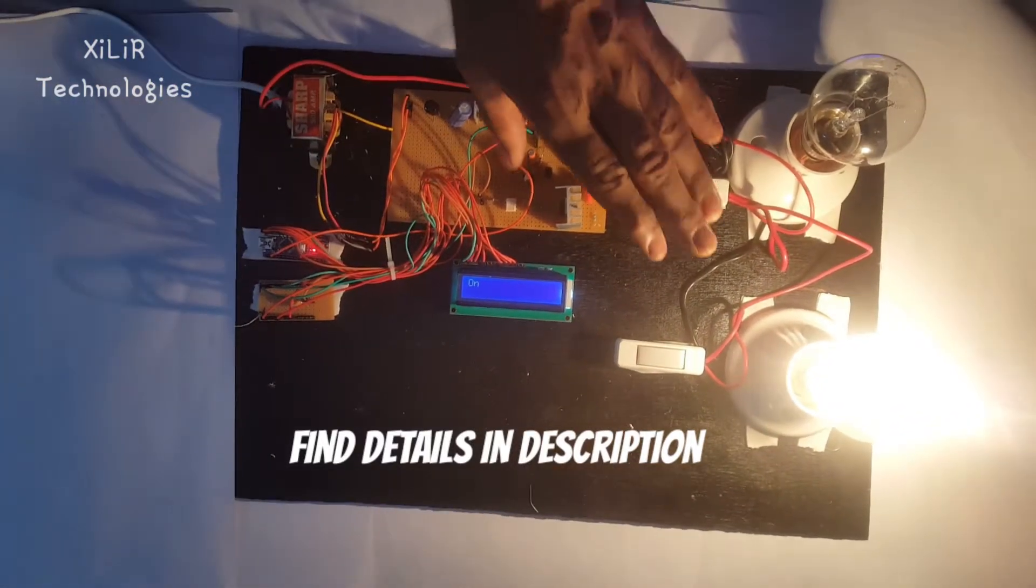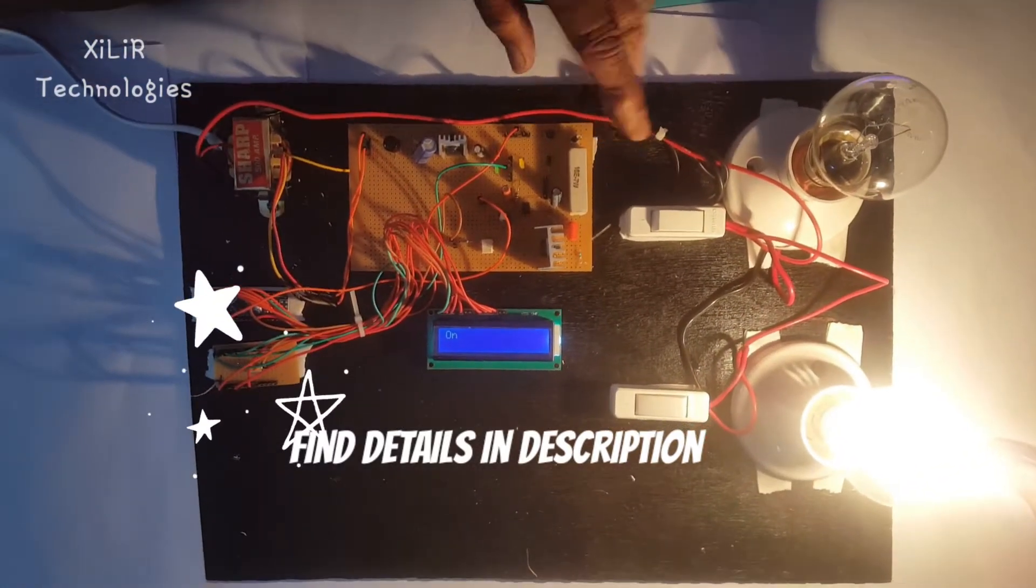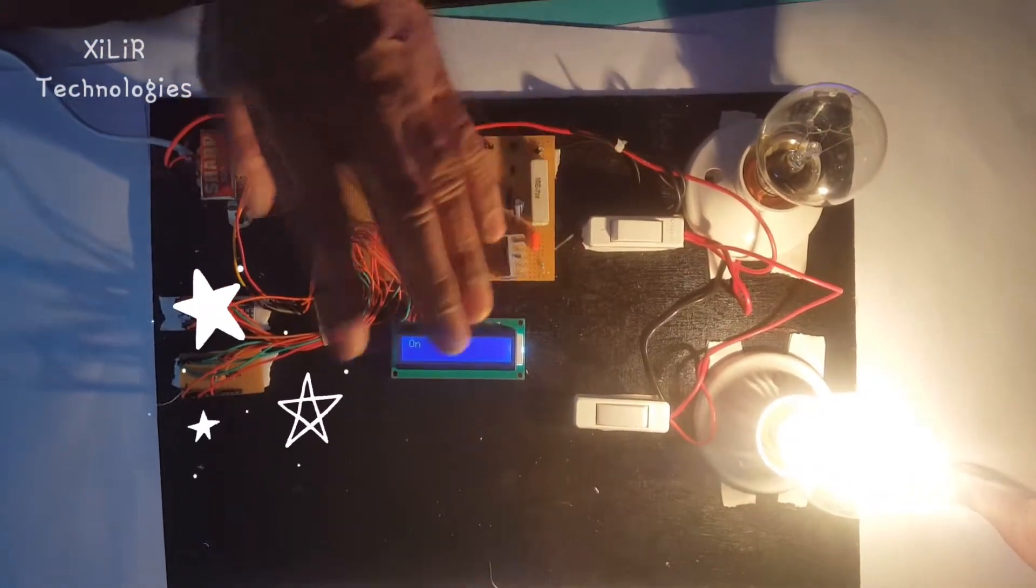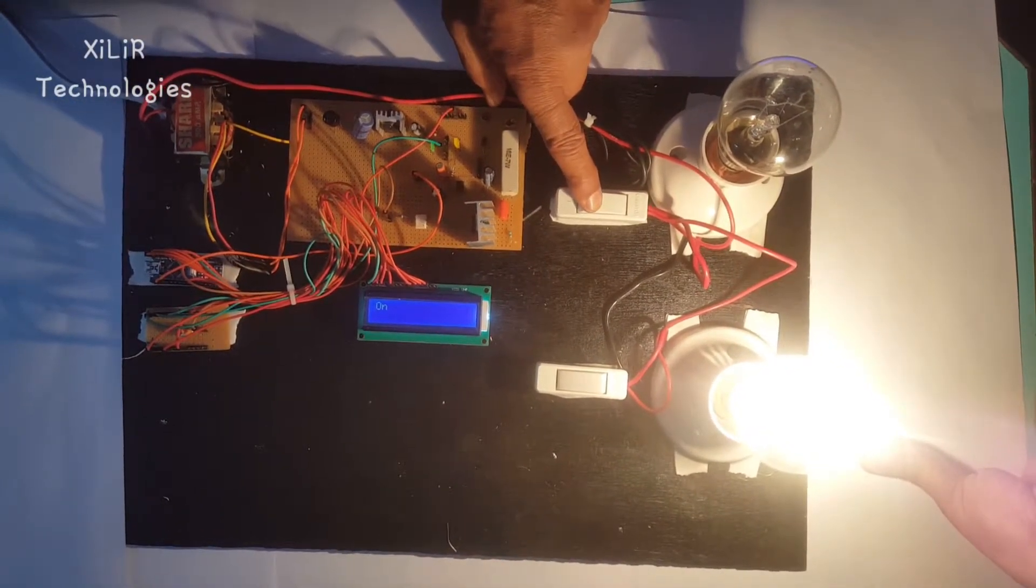When one load is switched on, system will be on. If overloading is done, the circuit will be off. Just see, we are switching another load, extra load.